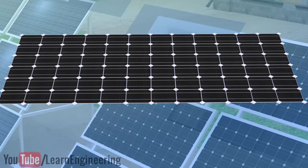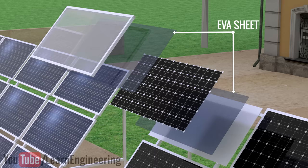The layer of EVA sheeting on both sides of the cells is to protect them from shocks, vibrations, humidity, and dirt.